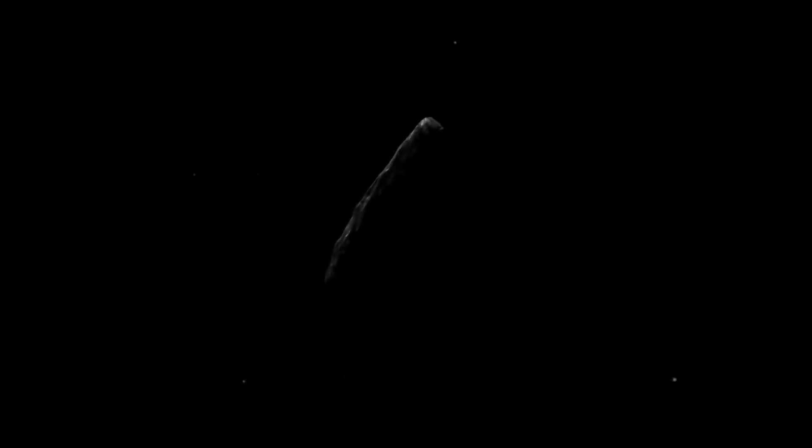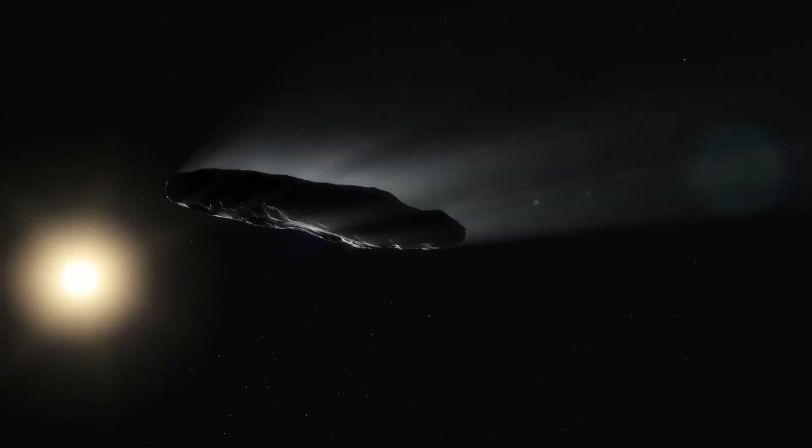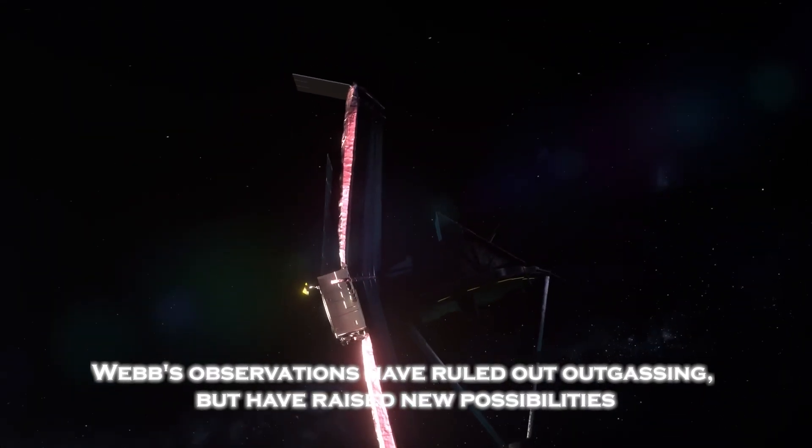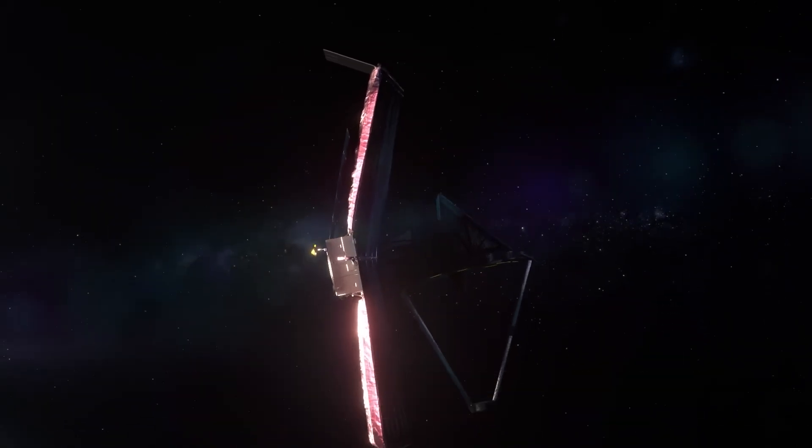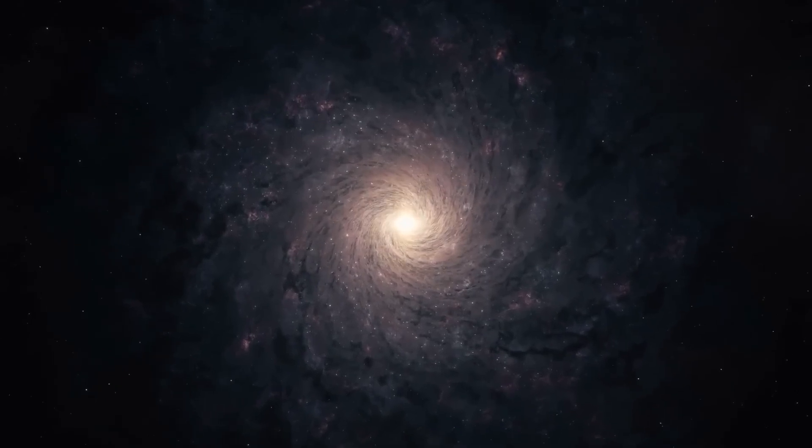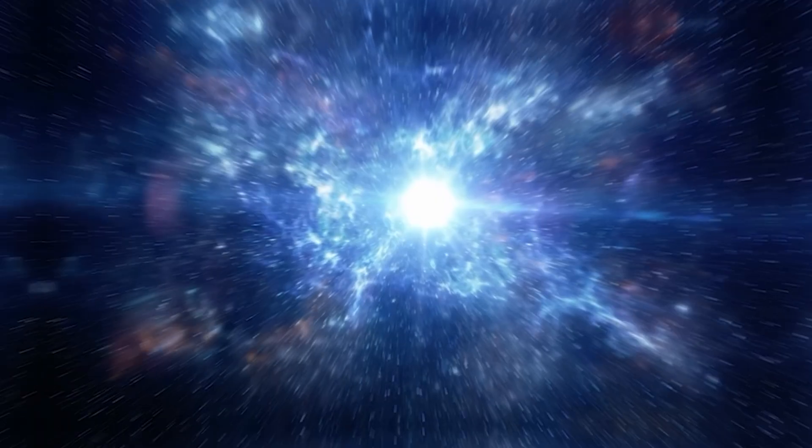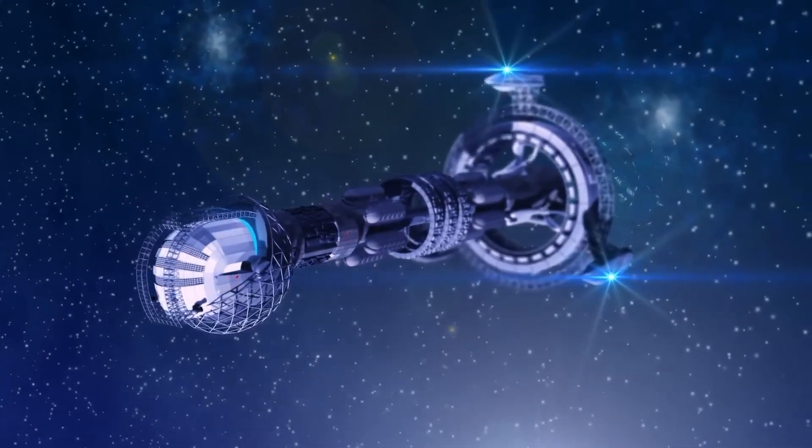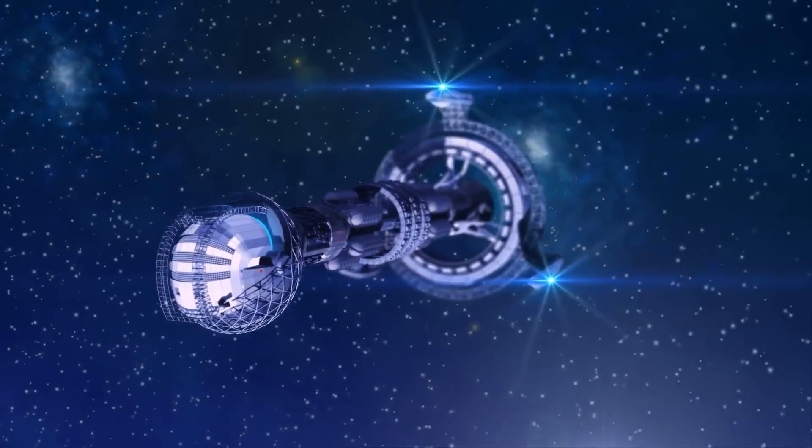One of the biggest enigmas of Oumuamua has been its anomalous acceleration as it leaves our solar system. Webb's observations have ruled out outgassing, but have raised new possibilities. One intriguing theory is that the acceleration could be caused by an exotic mechanism, such as a light sail, a hypothetical technology that uses the pressure of light to move through space.